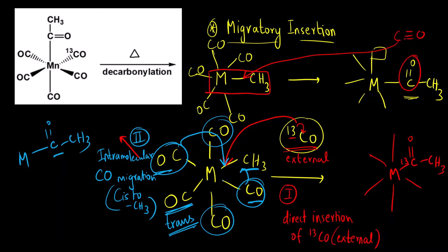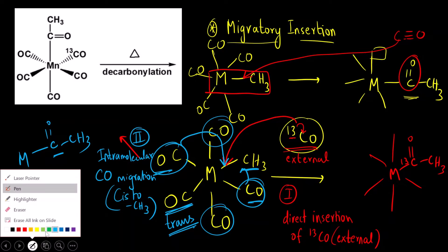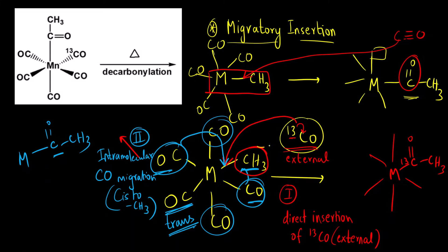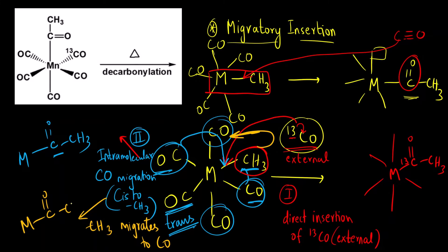The third possibility is that the methyl can migrate to the carbonyl. The methyl group migrates to CO. Again the product we get is the same acetyl group — the methyl group migrates to the carbonyl. So the question was: which of mechanisms one, two, or three is the preferred mechanism? That is what we have to find out.